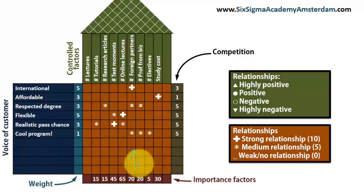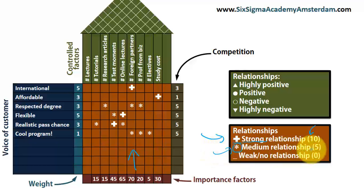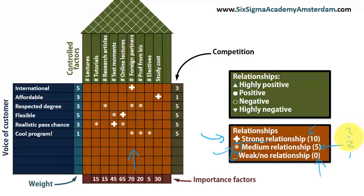In the middle part, you see symbols scattered throughout. We use a cross to indicate a strong relationship with a numerical value of 10, an asterisk to indicate a medium relationship with a value of 5, and blank to indicate no or very weak relationship with a value of 0. Again, 0, 5, and 10 are our values — you could use 1, 2, and 3 if you prefer.